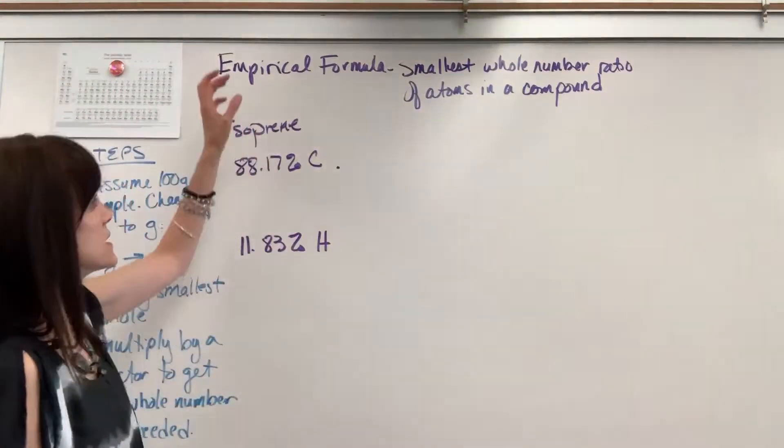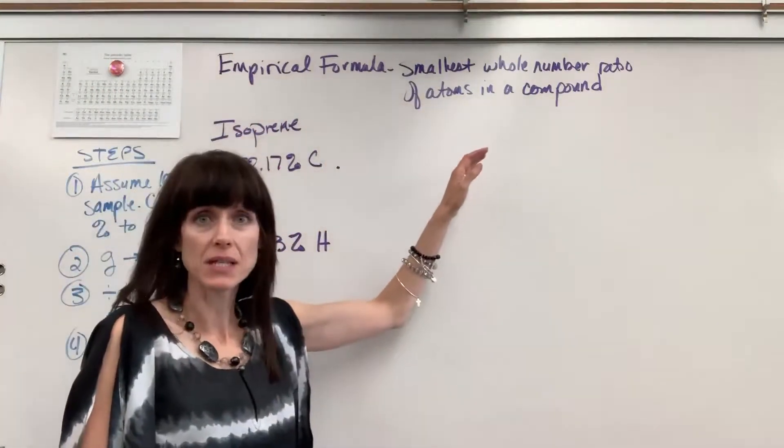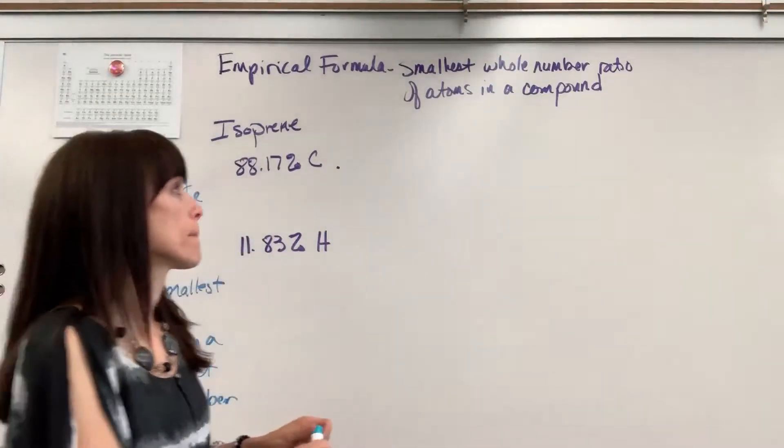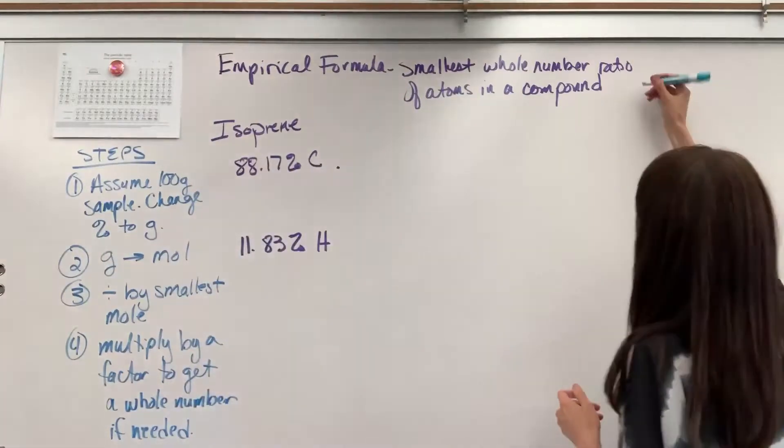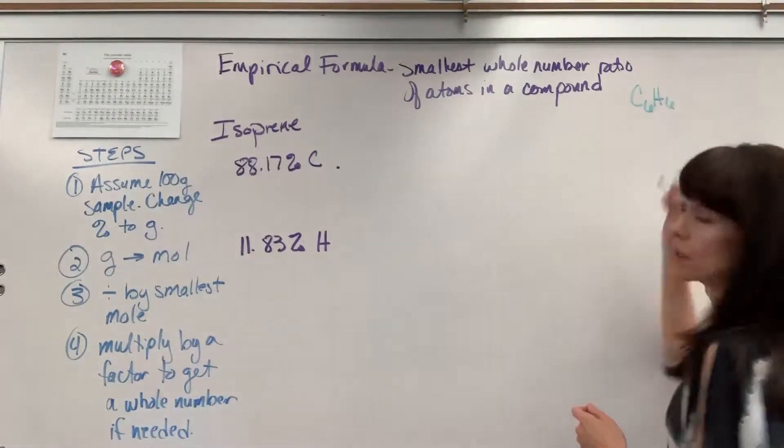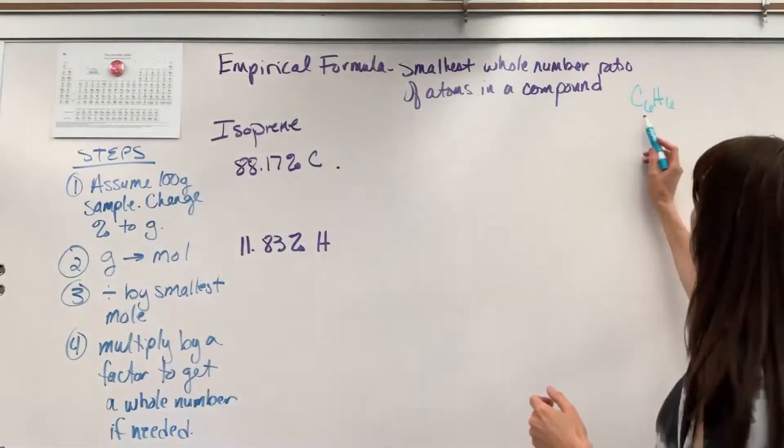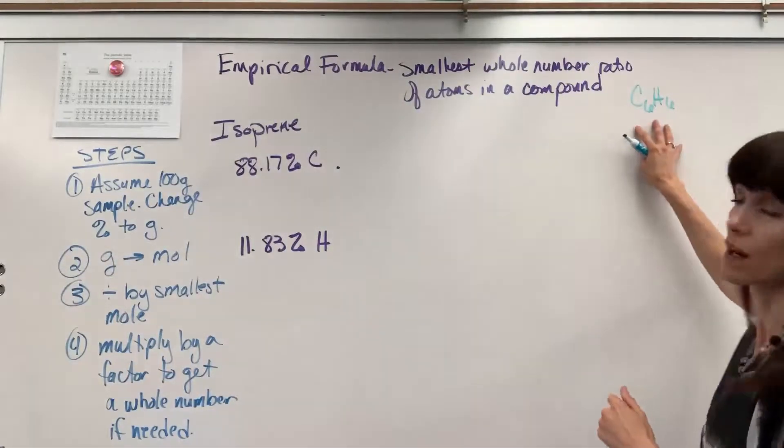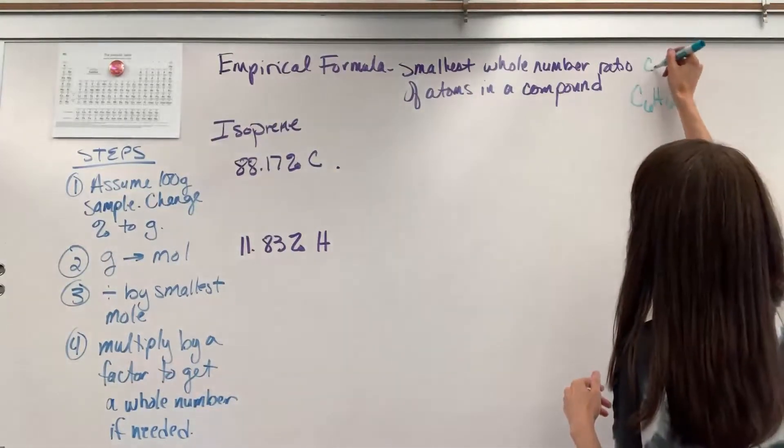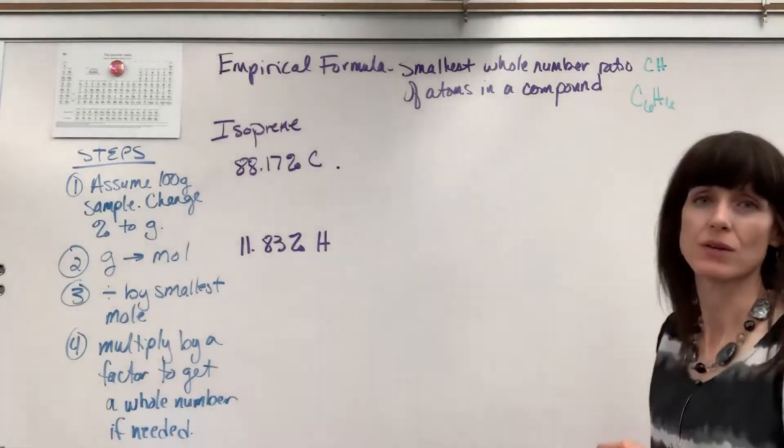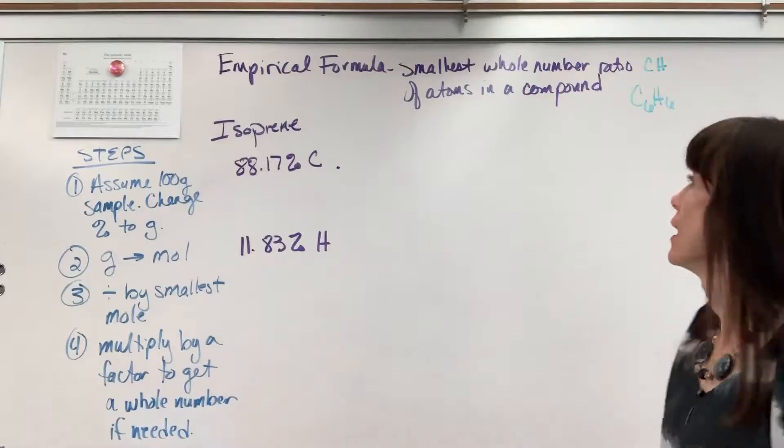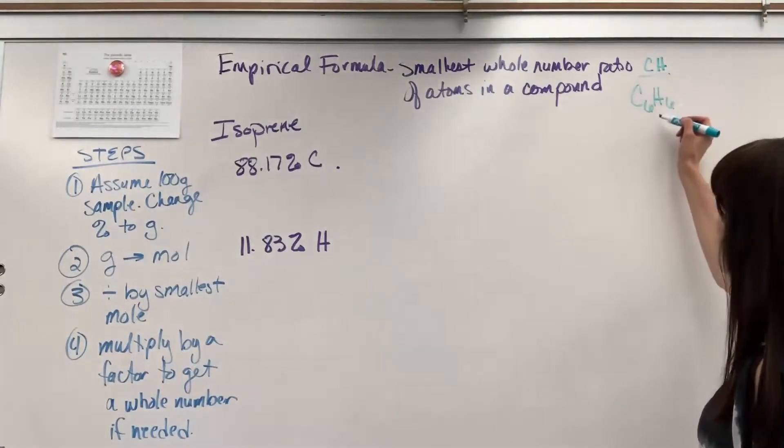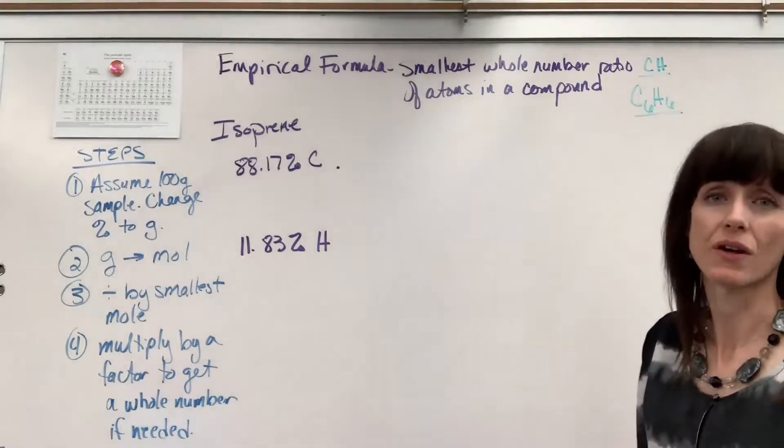Empirical formula is the smallest whole number ratio of atoms in a compound. Now that might seem a little confusing. Let me give you an example. We could have C6H6. That is benzene. That's not the smallest whole number ratio. The empirical formula for benzene is actually CH. You just divide those subscripts, and that gives you the empirical formula. So you reduce down to the smallest whole numbers. So this would be the empirical formula, and in the next video, I'll teach you how to get this. It's called the molecular formula.